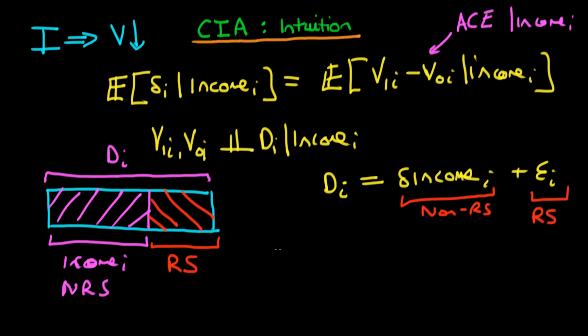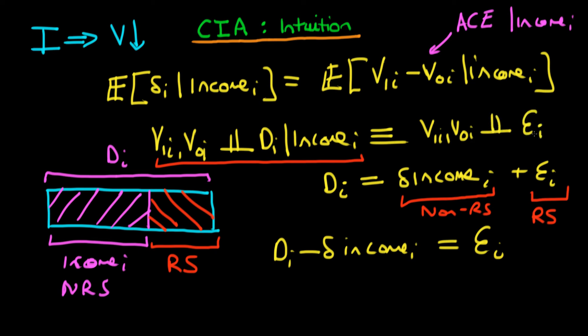So then, if I take Di and I remove the effect which is systematic, so that's this income effect here, what I'm left with is a pure, randomly selected part of Di. And so, essentially, what we actually mean up here when we say that V1i and V0i are conditionally independent of Di conditional on income, what we actually mean is that V1i and V0i are independent of this random part of Di, which is called epsilon in my notation.